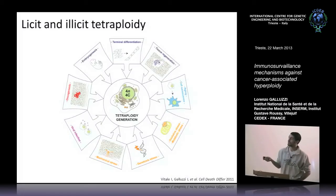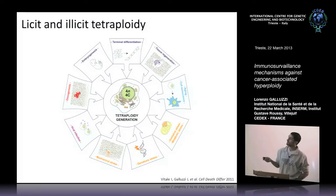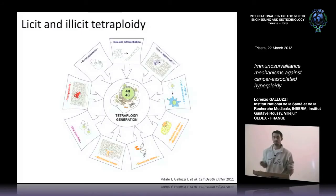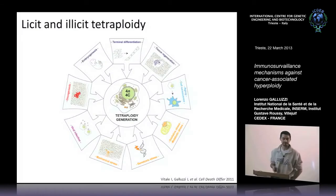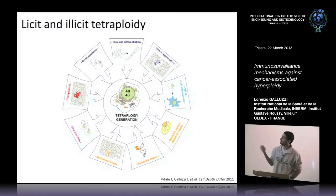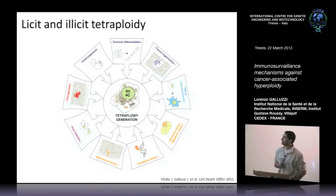For instance, in the muscle — terminally differentiated muscle fibers are tetraploid and hyperploid — and also in the liver, especially in subjects like me that come from Emilia-Romagna, who have a huge alcohol intake daily. So their livers contain a large amount of tetraploid cells.